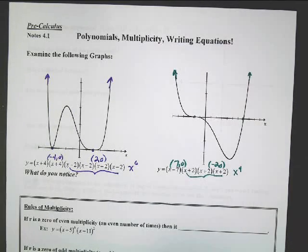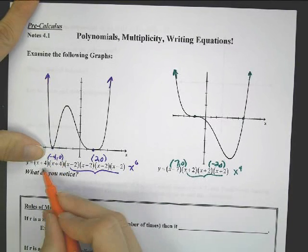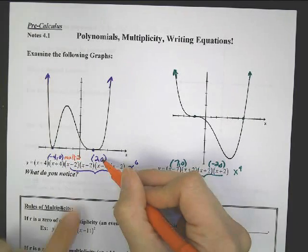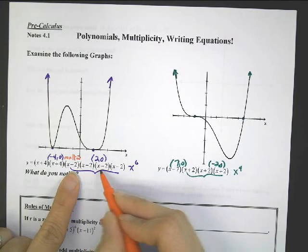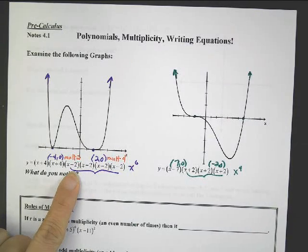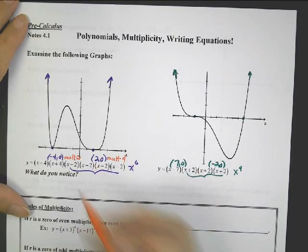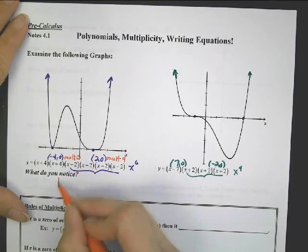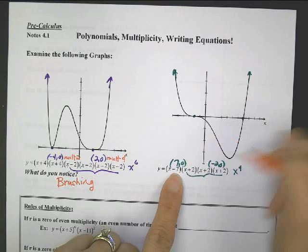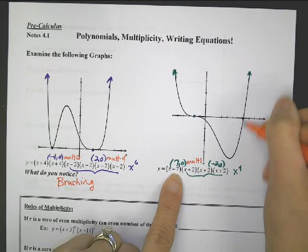So let's take a look at something called multiplicity. Negative 4 is a zero twice — multiplicity 2. And 2, 0 appears 4 times — multiplicity 4, a repeat 4 times. And something interesting happens here: both of these are not crossing through. They're both brushing. They're both brushing.